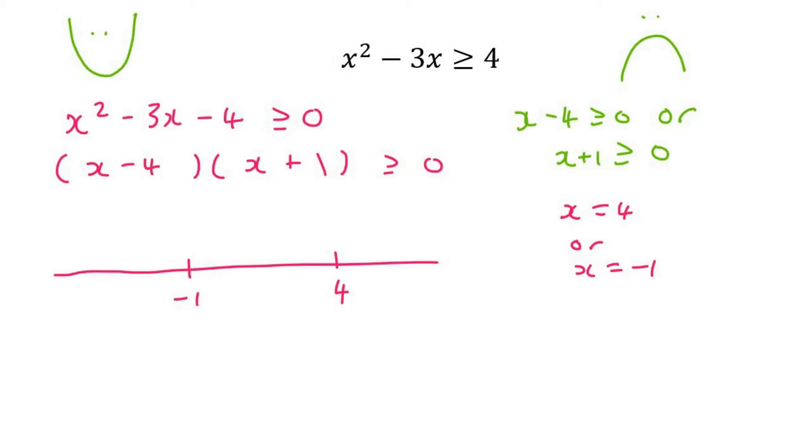Now the way to tell if we have a happy or a sad is to look at the number in front of the x squared. If it's positive, it's happy. If it's negative, it's sad. So because this number is technically a positive 1, it means it's happy. So we can draw ourselves a happy parabola like that.